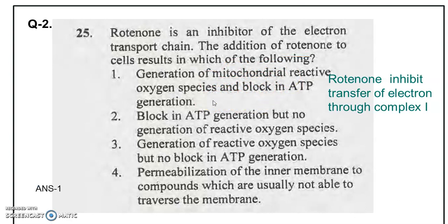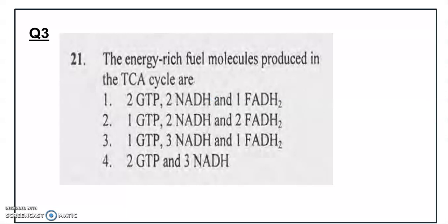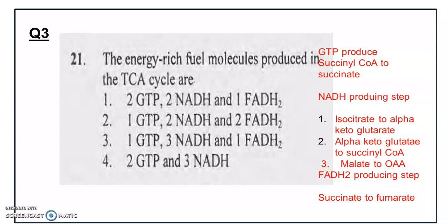So the answer is the generation of mitochondrial reactive oxygen species and block of ATP generation — option one is the correct answer. Question number three: the energy-rich fuel molecules produced in the TCA cycle. During the TCA cycle, one GTP molecule is produced, three NADH molecules, and one FADH2 are produced. GTP is produced in the succinyl-CoA to succinate conversion. The three NADH-producing steps are: isocitrate to alpha-ketoglutarate.